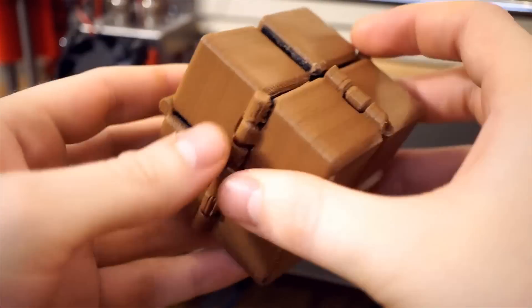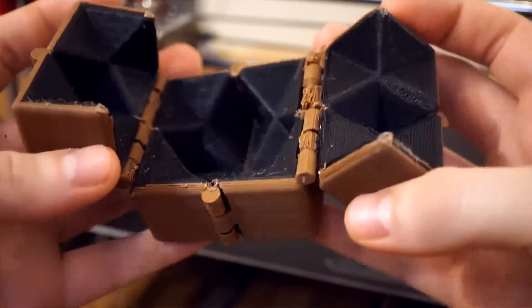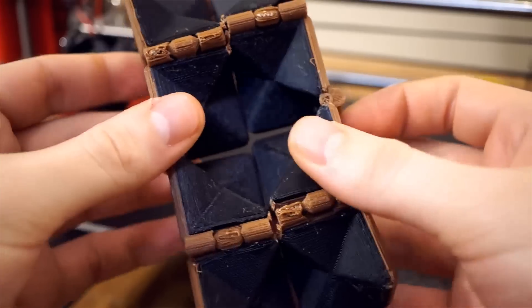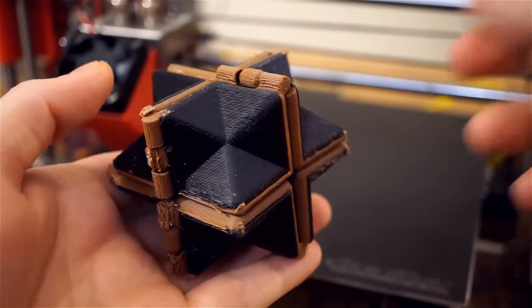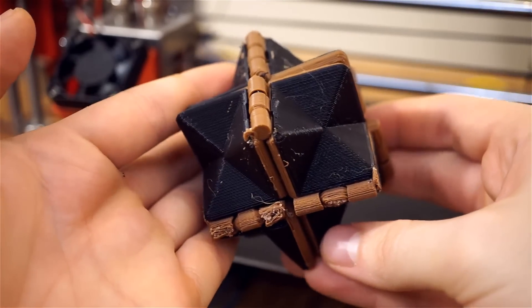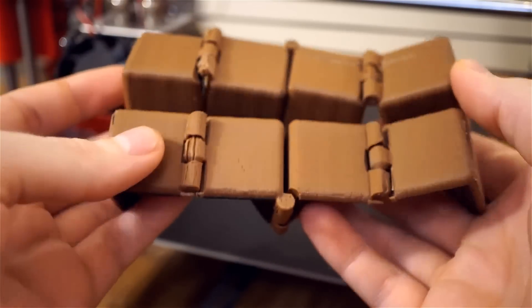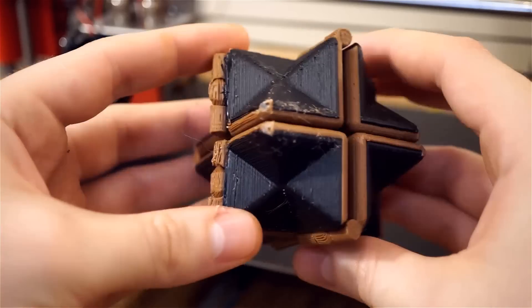This is the last model I wanted to test out. It is a fidget cube that has several hinges that allow it to completely invert from inside out. Even more impressive is that this printed in one piece without any assembly. I think printing this with two colors makes it more interesting than if it was all just one color.